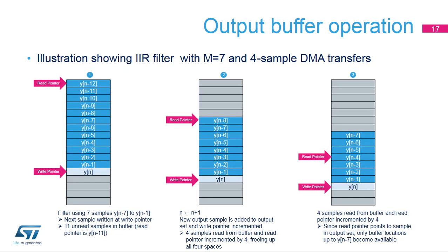This figure summarizes the operation of the output buffer. During step 1, the filter calculates Y(N) from Y(N−7) to Y(N−1); eleven samples are unread. During step 2, N is incremented, the filter calculates Y(N) from Y(N−7) to Y(N−1), and software or DMA reads 4 samples, shifting the read pointer to the oldest sample. During step 3, N is incremented, the filter calculates Y(N) from Y(N−7) to Y(N−1), and software or DMA again reads 4 samples, shifting the read pointer. However, samples Y(N−7) to Y(N−5) are not deallocated because they are used in the current calculation.